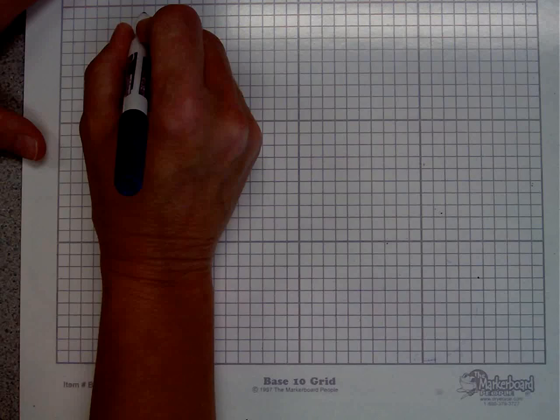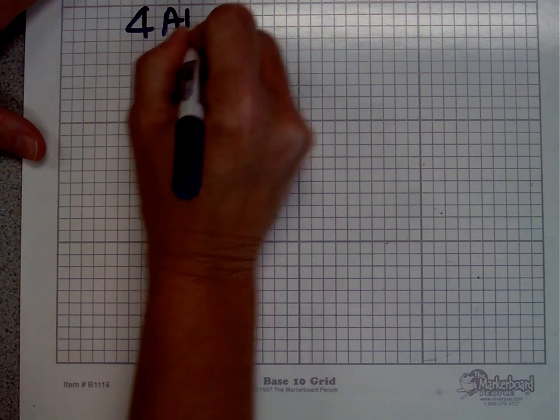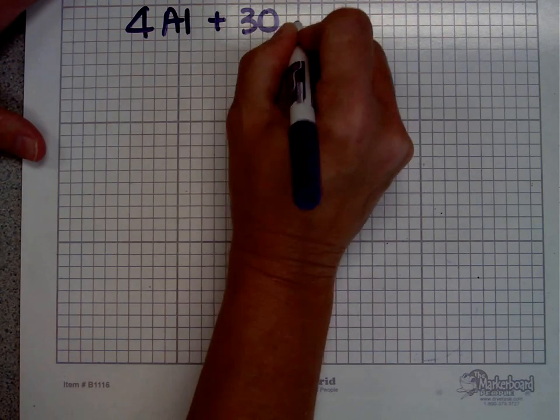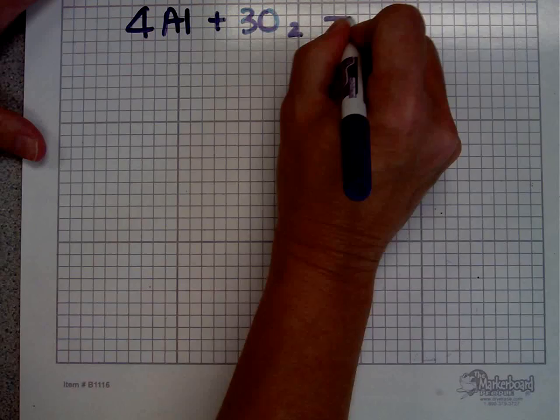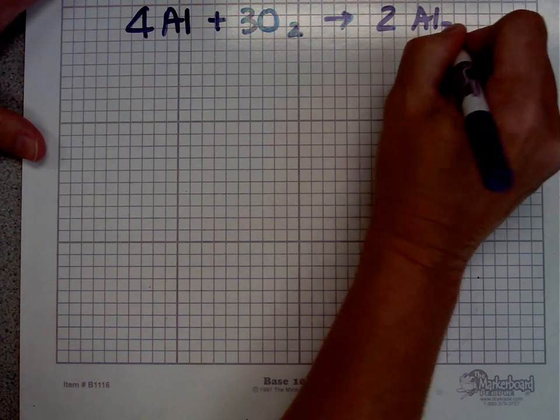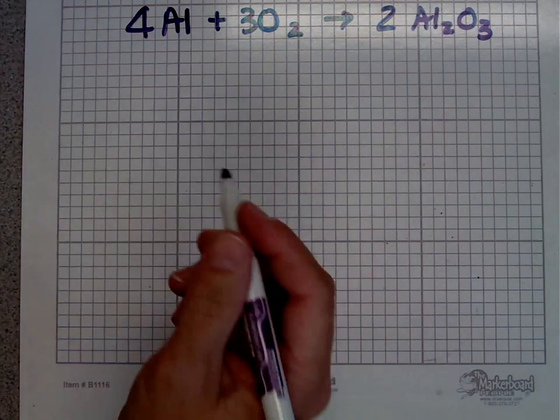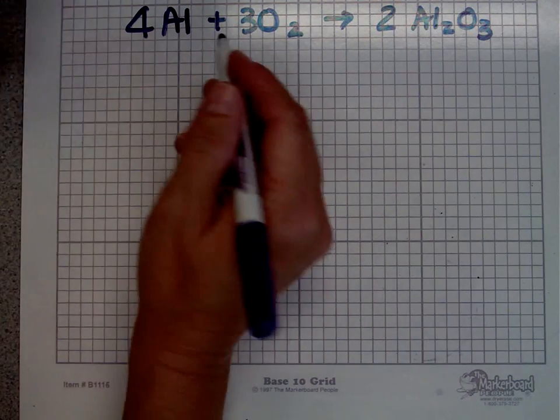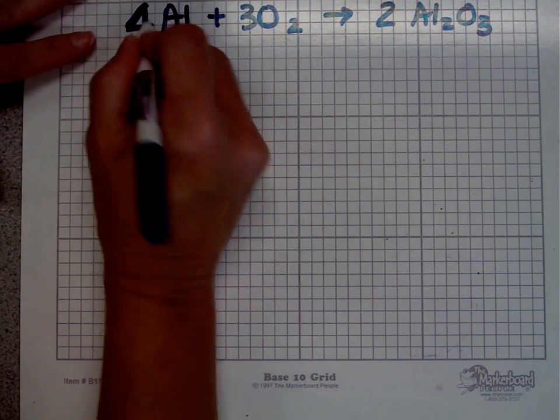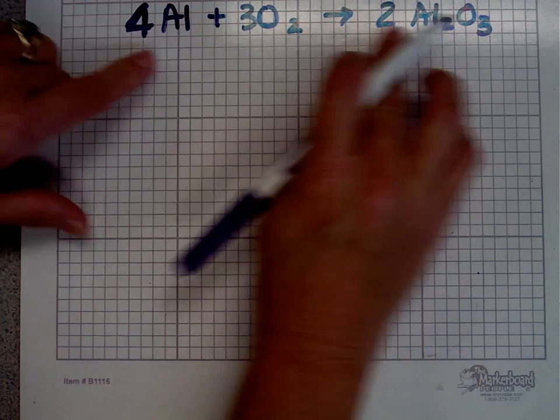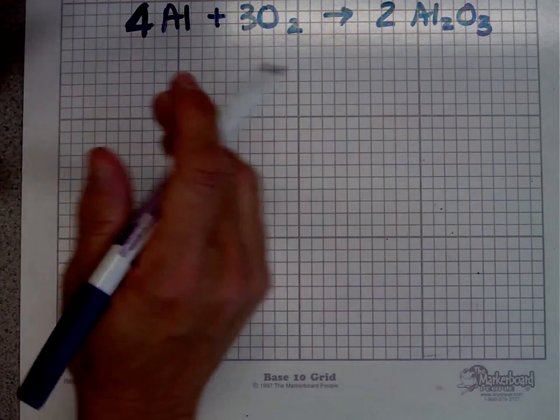As always with stoichiometry problems, we start out with an equation. 4 moles of aluminum plus 3 moles of oxygen gives us 2 moles of aluminum oxide. The second thing we want to do is check and make sure it's balanced. 4 aluminums, 4 aluminums, 6 oxygens, 6 oxygens, so I'm good.